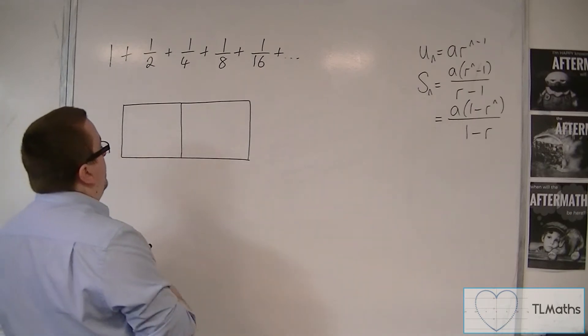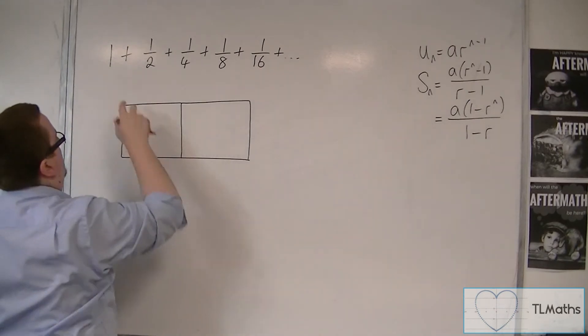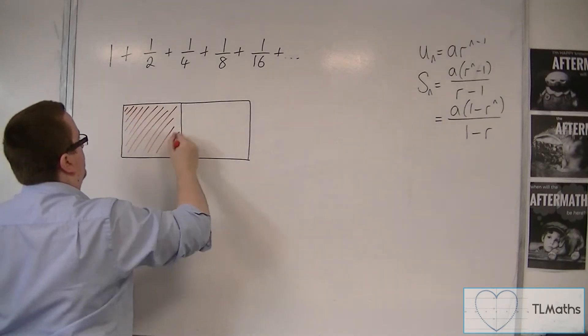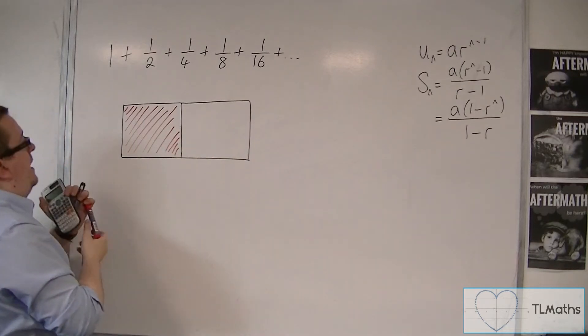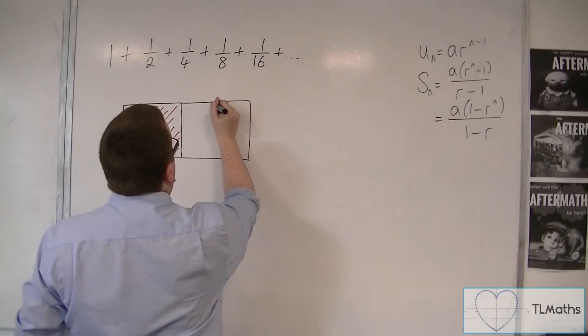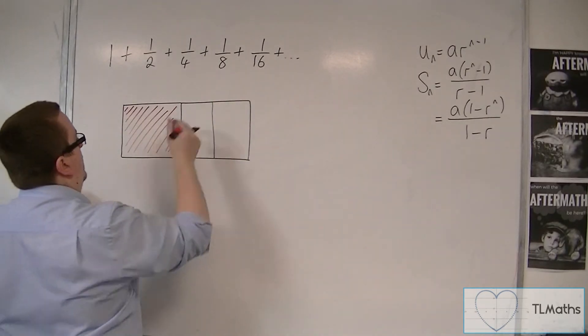So what we're going to do is we're going to progressively add up the area. So 1 represents one of these boxes. So that is 1. And then I'm going to add on a half. So I'm going to split this box down the middle. And I'm going to add that half on.